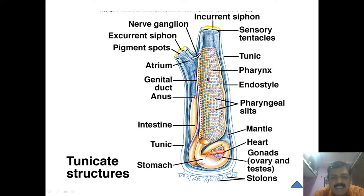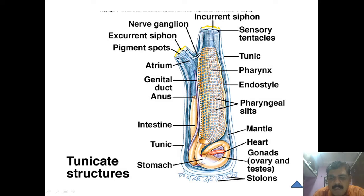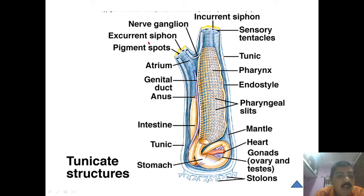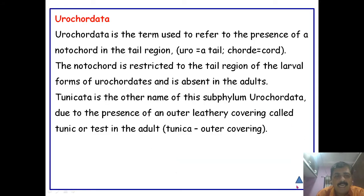In a tunicate, there is an incurrent siphon from where water goes inside. Then there is the pharynx and the endostyle, which is equivalent to the thyroid gland. These are the pharyngeal openings — the pharyngeal gill slits. Most of the body is occupied by the pharynx. The digestive system includes the stomach, then gonads — ovaries or testes. The outer covering or leathery skin is the tunic. The last part is the anus, which opens into a chamber called the atrium, and water is expelled outside of the body by the excurrent siphon.